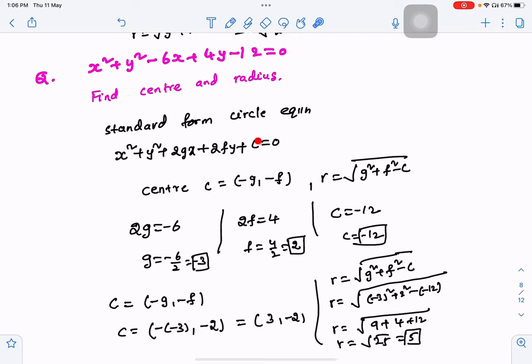Here, the constant is minus 12. Here, the constant is minus 12. So, c value is minus 12.